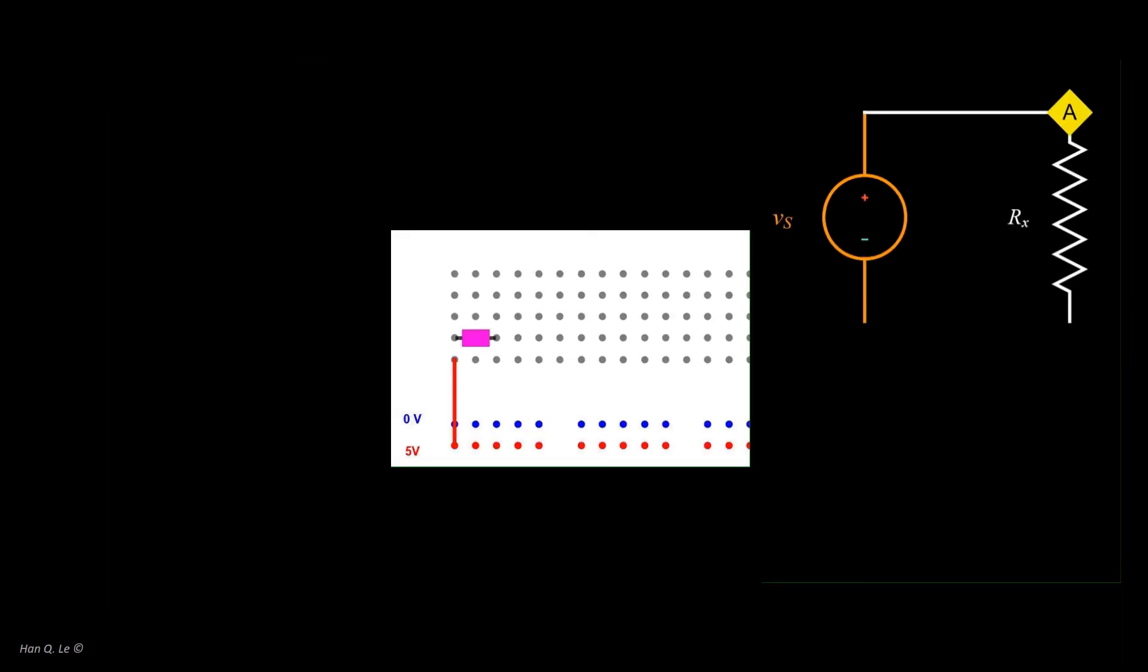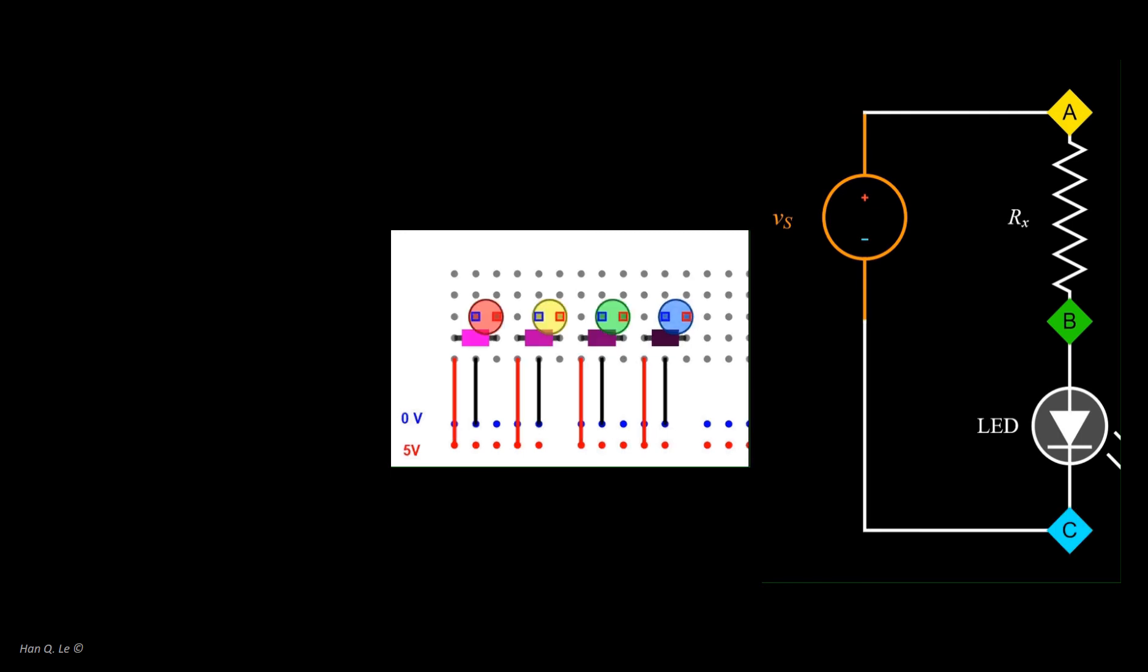For the first time breadboard user, it is good to practice correlating a schematic circuit drawing to a physical wiring diagram on a breadboard. This app shows a step-by-step assembling of the circuit with one-to-one correspondence between the two. You are encouraged to explore, develop any approach on your own, as long as the final circuit works.